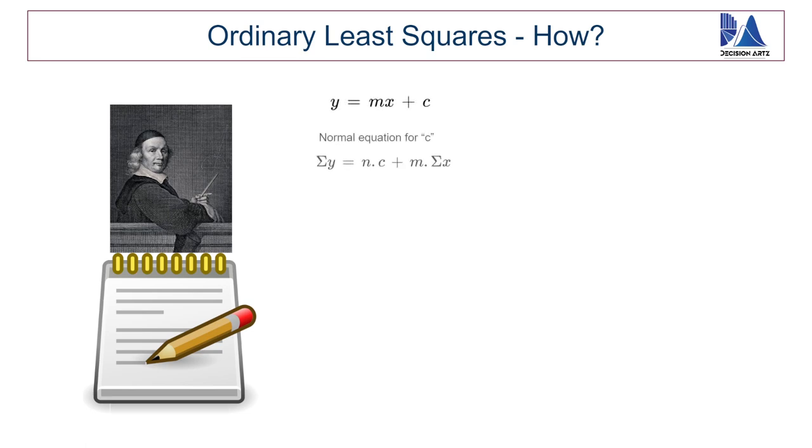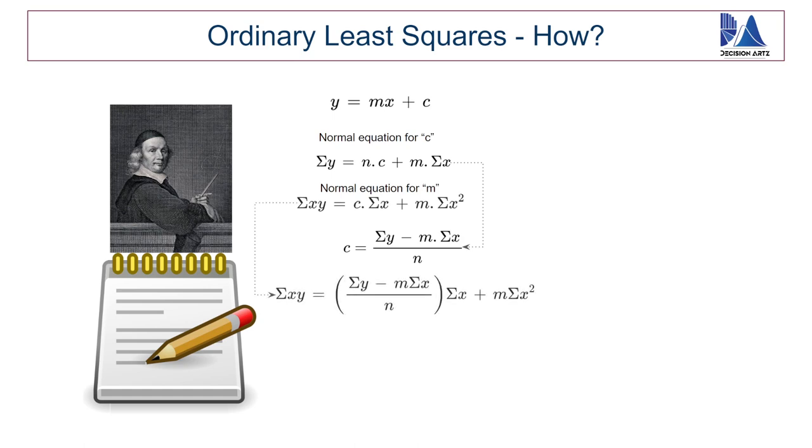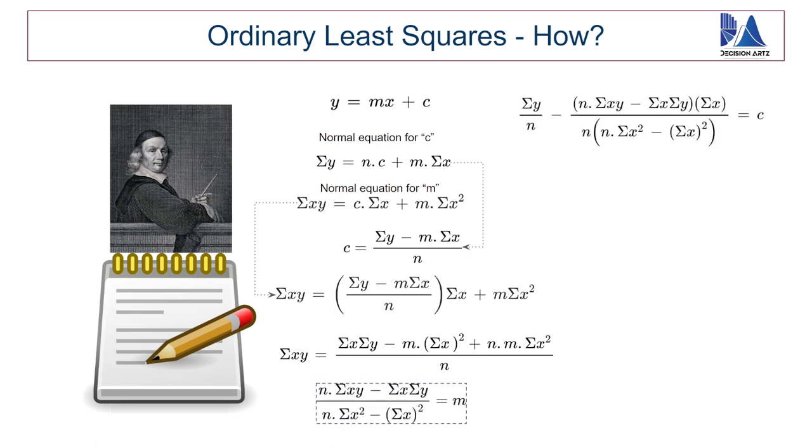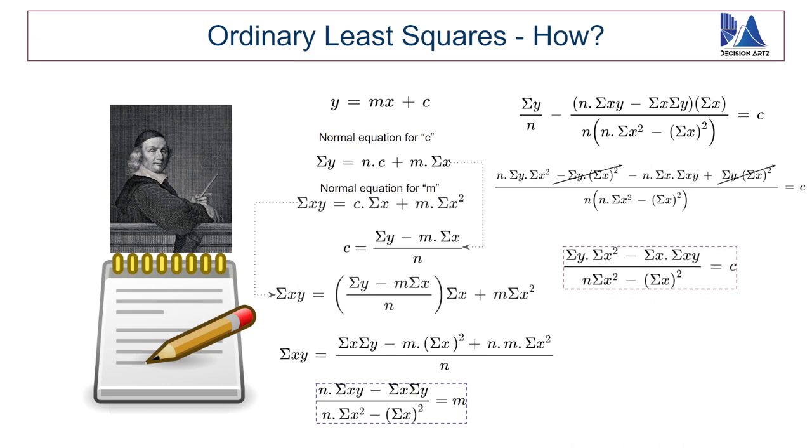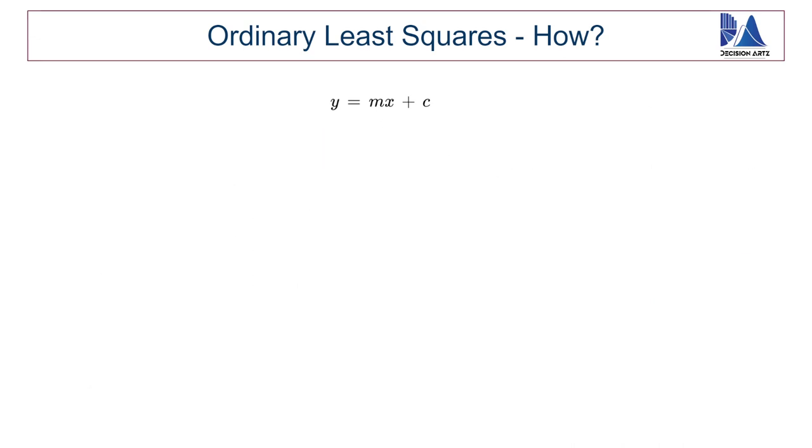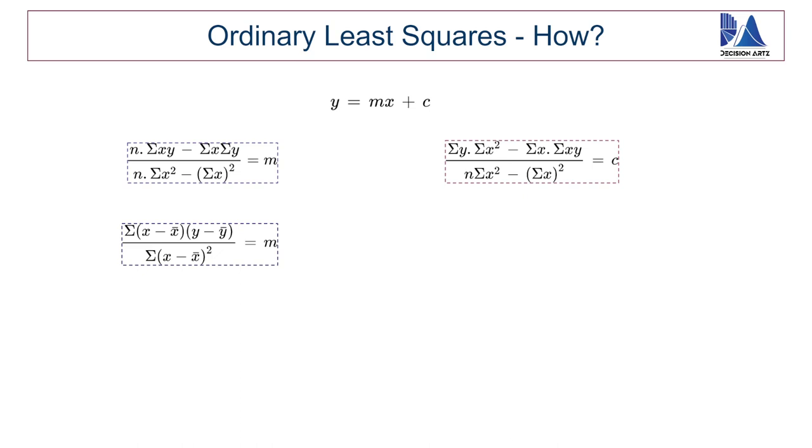Alright, let's start with the normal equations for c and m. So, substituting the value of c in the normal equation for m, we can solve for m. And now, substituting the value of m in the equation of c, we can get the value of c. Now, these are the two equations for m and c. This same equation could also be represented as X. And well, this formula for m is quite a good approximation for m, where it says that m equal to covariance of X and Y divided by variance of X.